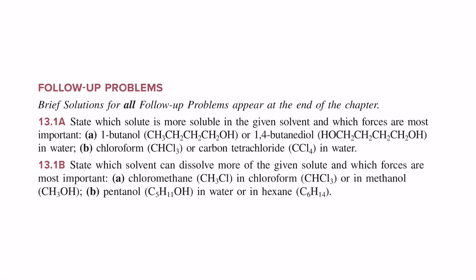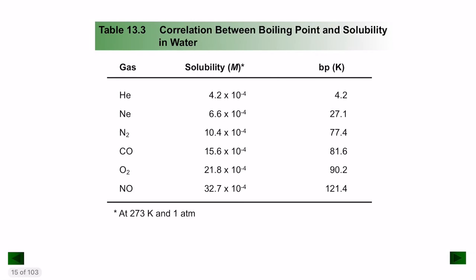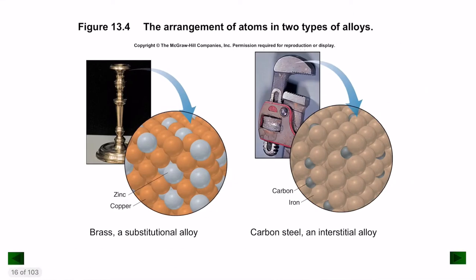There is a correlation between solubility and boiling point: as solubility increases, boiling point also increases. This relationship exists because higher solubility indicates the molecule is forming stronger intermolecular bonds, requiring more energy to break. Therefore, as solubility increases, boiling point increases accordingly.